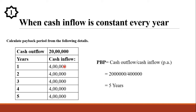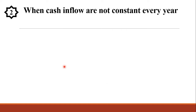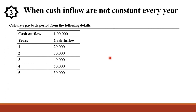Now let us see Problem number 2 — how to solve a sum when cash inflows are not constant every year. Calculate the payback period from the following details: cash outflow is 1 lakh, number of years is 5, and the cash inflows for each year are 20,000, 30,000, 40,000, 50,000, and 30,000. The cash inflow for each year is different — they are not constant — so we will have to do some calculation.